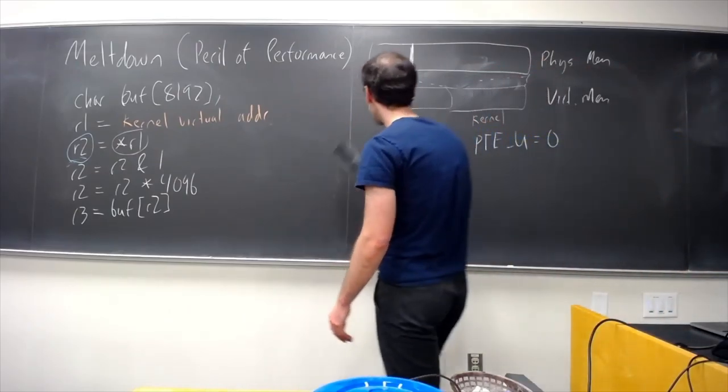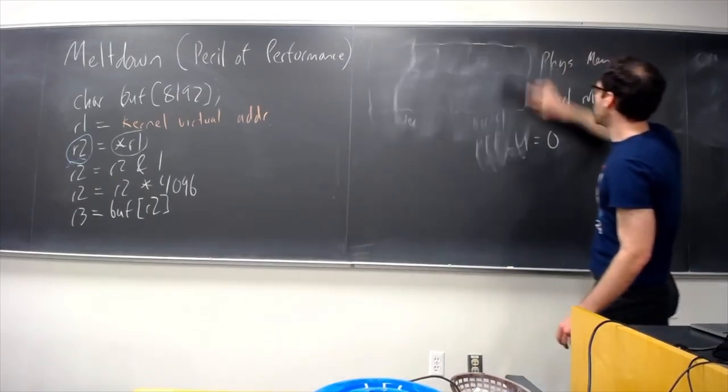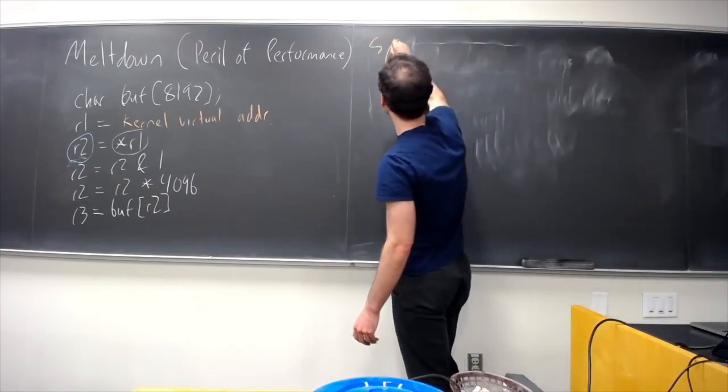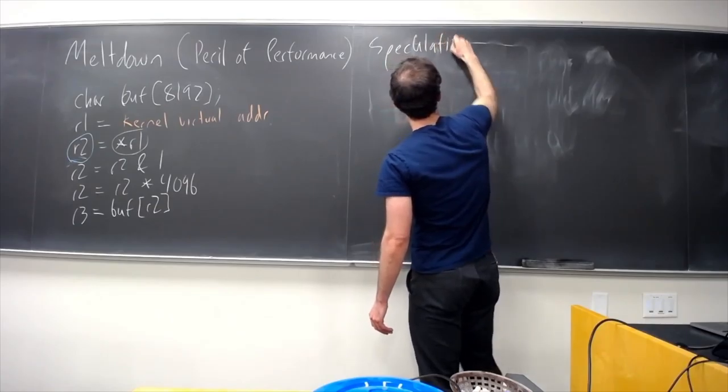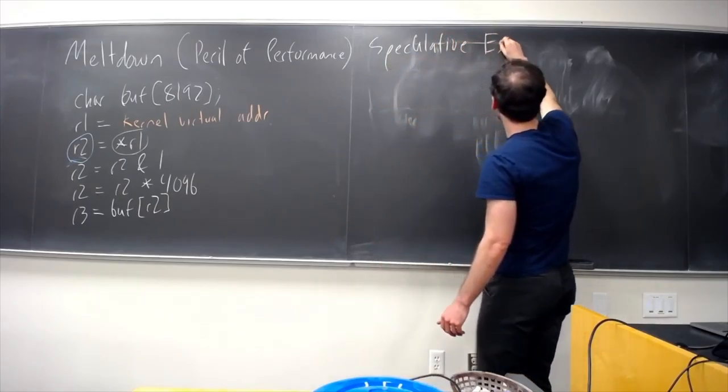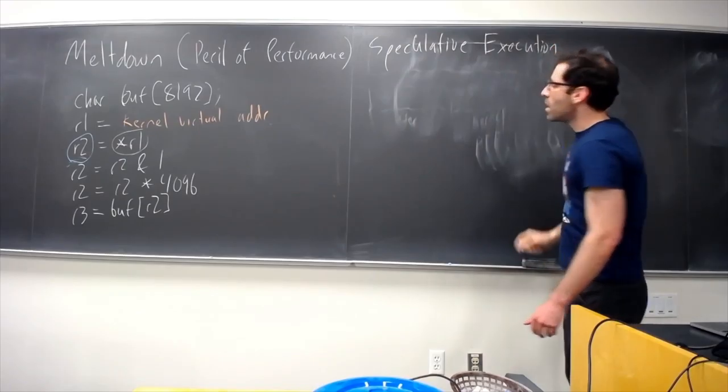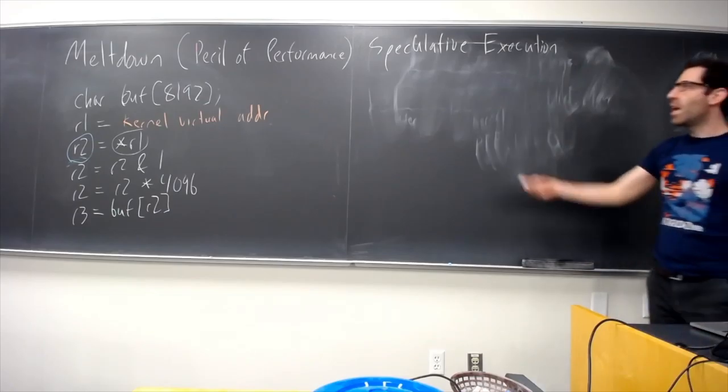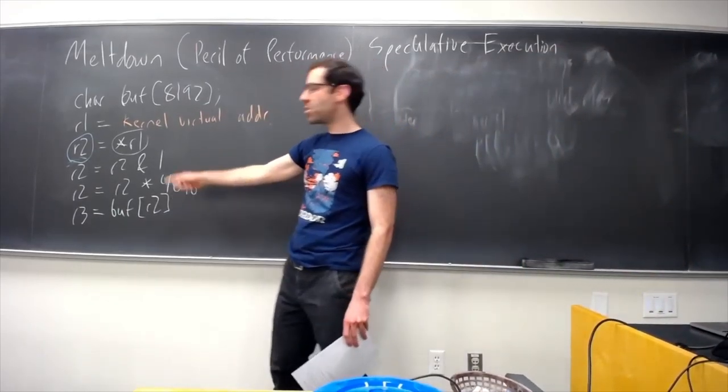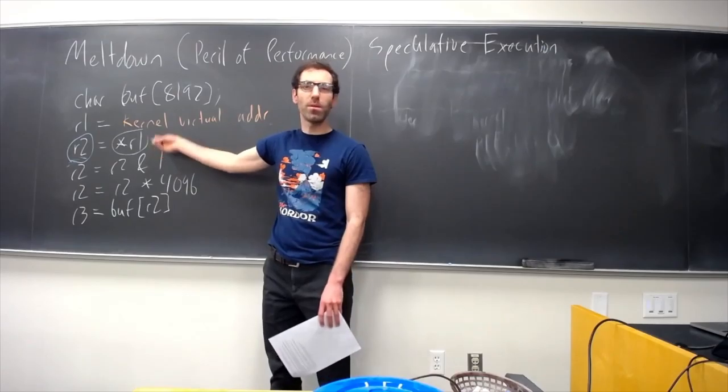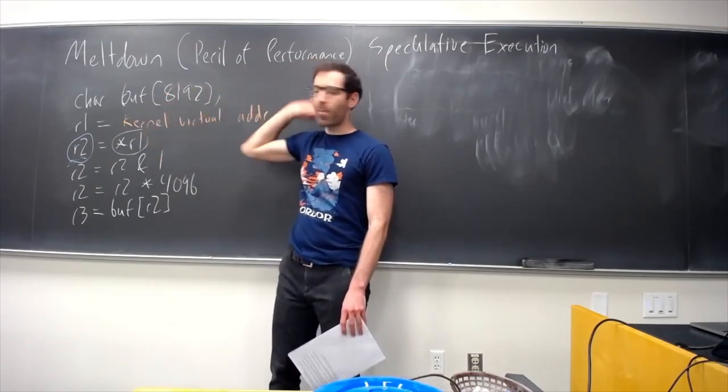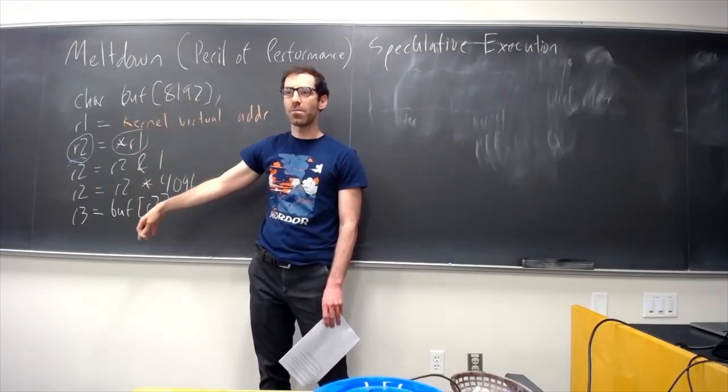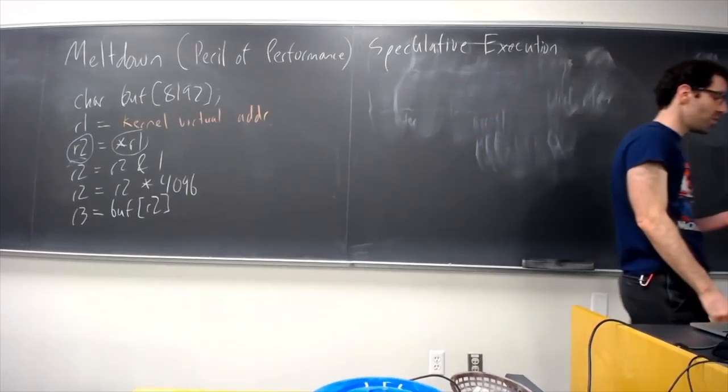Another part of the picture is this technique called speculative execution. And this is the way in which this code, which seems like it should try and read forbidden memory and just crash. Speculative execution is the way in which running this code actually becomes useful to the attacker.